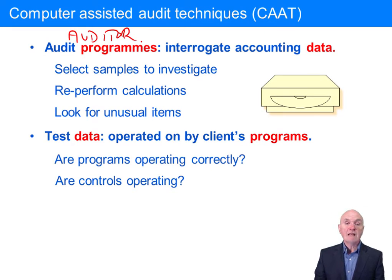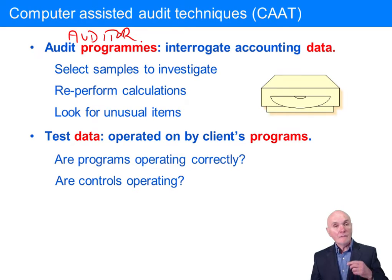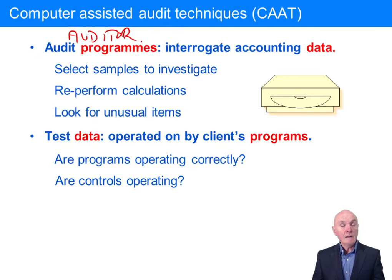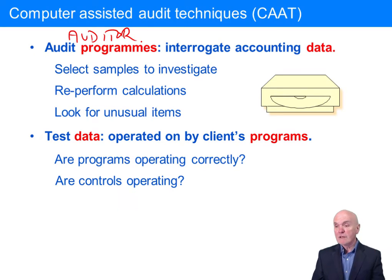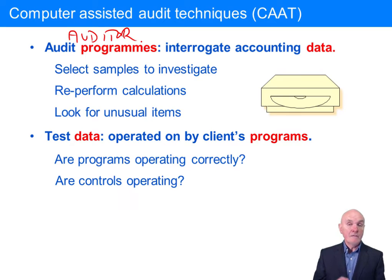For example, you can select samples to investigate. If you remember when we were talking about sampling, ideally you like to get random sampling. If you've got 10,000 or 100,000 records on a computer, it's pretty easy to get your audit programme to select maybe 100 of those records at random. Or it would be very easy to get it to stratify — you could tell the audit programme: print out every balance which is over 250,000; print out 10% of the balances which are between 50,000 and 250,000; print out 100 balances which are under 50,000.